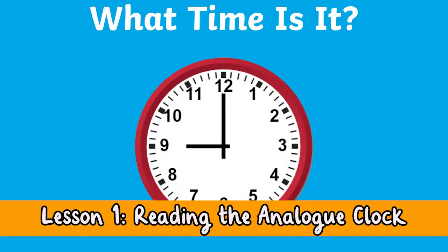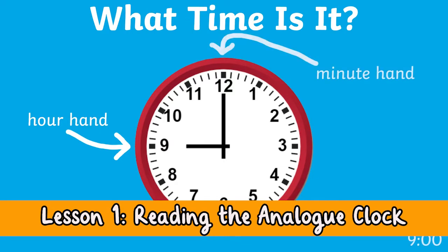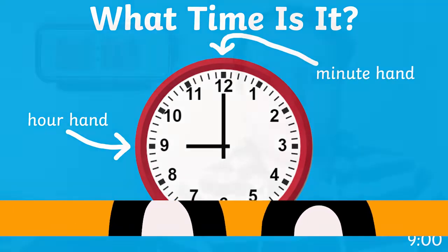In this first lesson, Jack teaches how to work out the time to the exact minute, specifically on an analogue clock. The short hand, known as the hour hand, points at the nine, so it's nine hours. The long hand, known as the minute hand, points at the twelve, so you know it's on the hour.